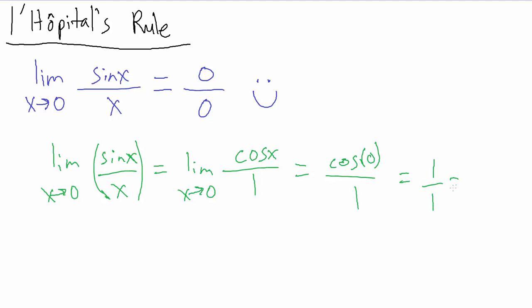So cosine of zero is one, so we have one divided by one, which is one. So that's the answer to our problem. Limit as x goes to zero of sine of x over x equals one. And we just found that out by L'Hopital's rule.